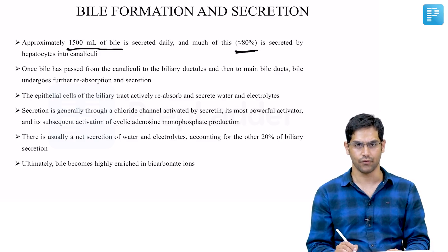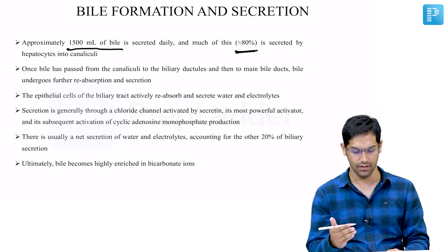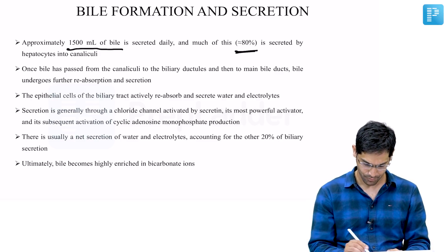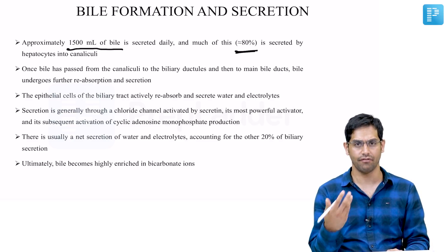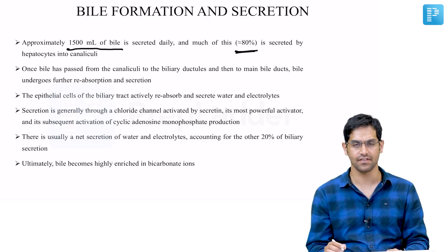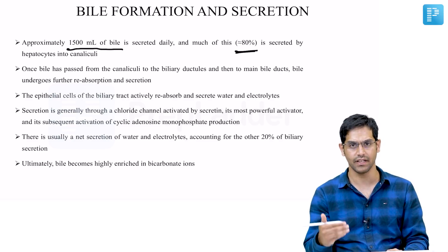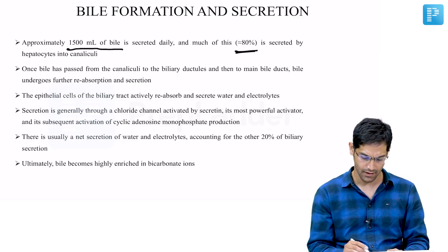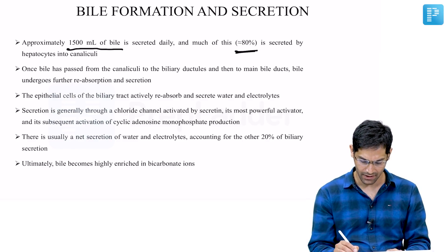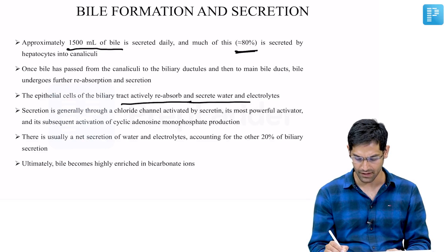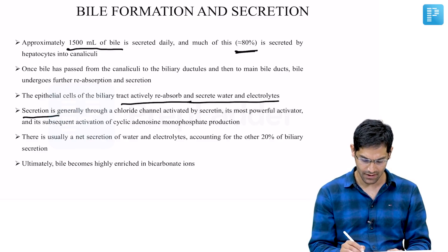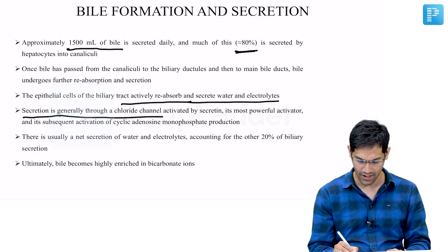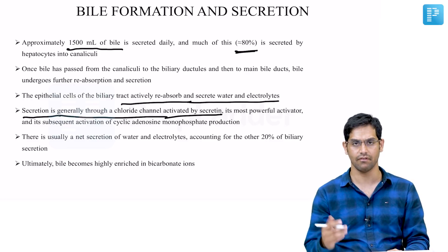Once bile reaches the canaliculi, a lot of reabsorption and secretion can also happen through the canaliculi. The epithelial cells of the biliary tract can actively reabsorb and secrete water and electrolytes. Secretion is generally through a chloride channel activated by secretin.